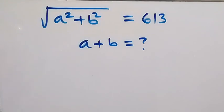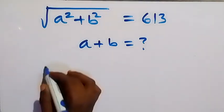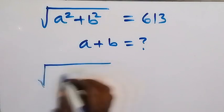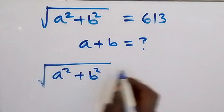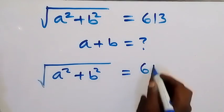Hello, you are welcome. Here we want to find the value of a plus b in this algebra problem given that the square root of a squared plus b squared equals 613.